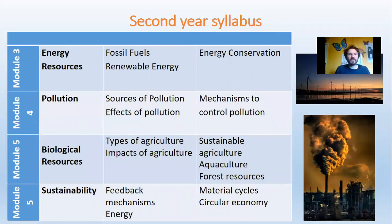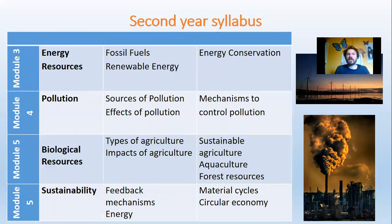In the second year there's a big module on comparing and contrasting different ways of generating energy, such as renewables and fossil fuels. A big topic on different types of pollution — air pollution, nutrient pollution, chemical pollution, noise pollution — and also the ways in which you can control those. There's a topic on agriculture, different types of agriculture, and evaluating the strengths and weaknesses of those different sorts, as well as an overall unit which ties together lots of the stuff covered in the first and second year to do with creating a sustainable future.